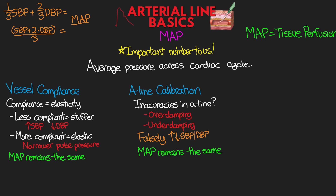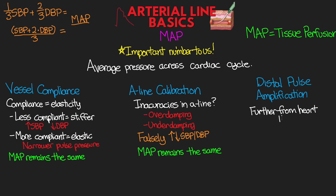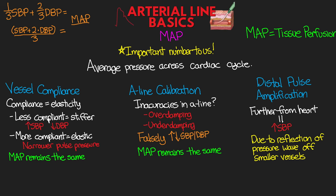Finally, we have something called distal pulse amplification. This is also something I'm going to talk about more in depth in the next lesson, but what this means is that the further out from the heart, the higher the systolic blood pressure will be. This may seem counterintuitive, but as you know, the further out we go, we end up with smaller and smaller vessels. Due to the reflection of the pressure wave as the blood is being ejected off of these smaller vessels, it can bounce back and travel back through our circulatory system, and this can lead to an elevation in the systolic blood pressure. We do see some drops in mean arterial pressure as we travel further out in the arterial system, but the MAP is going to be much more stable than these changes in systolic blood pressure.